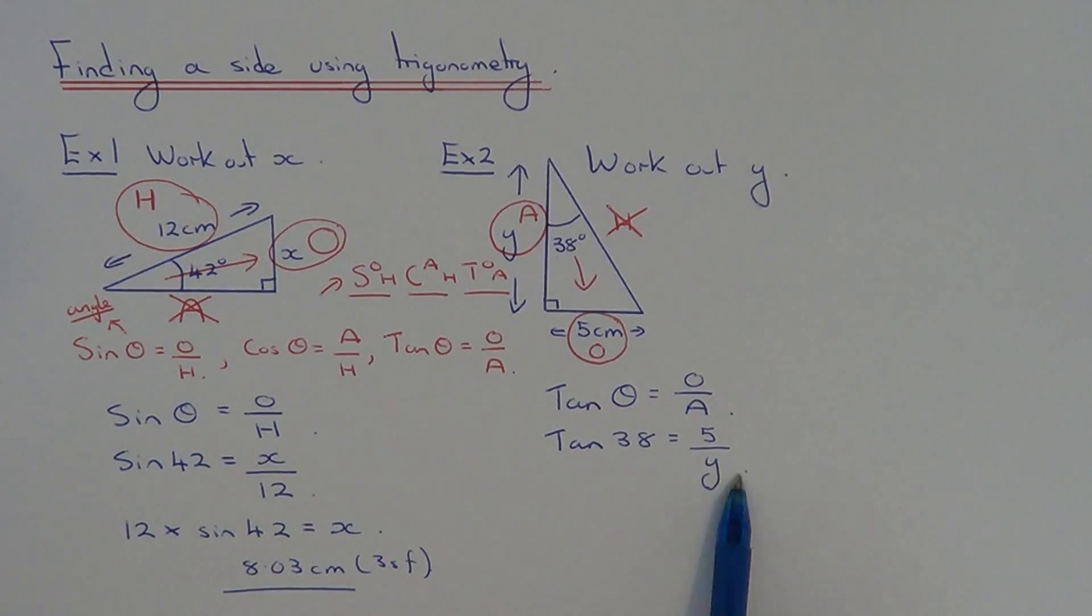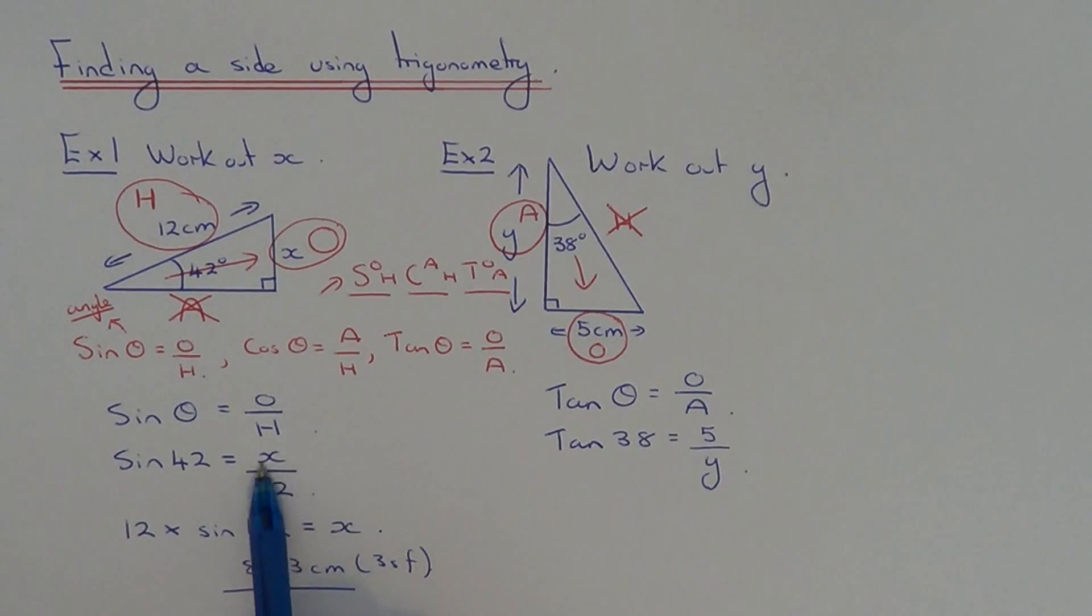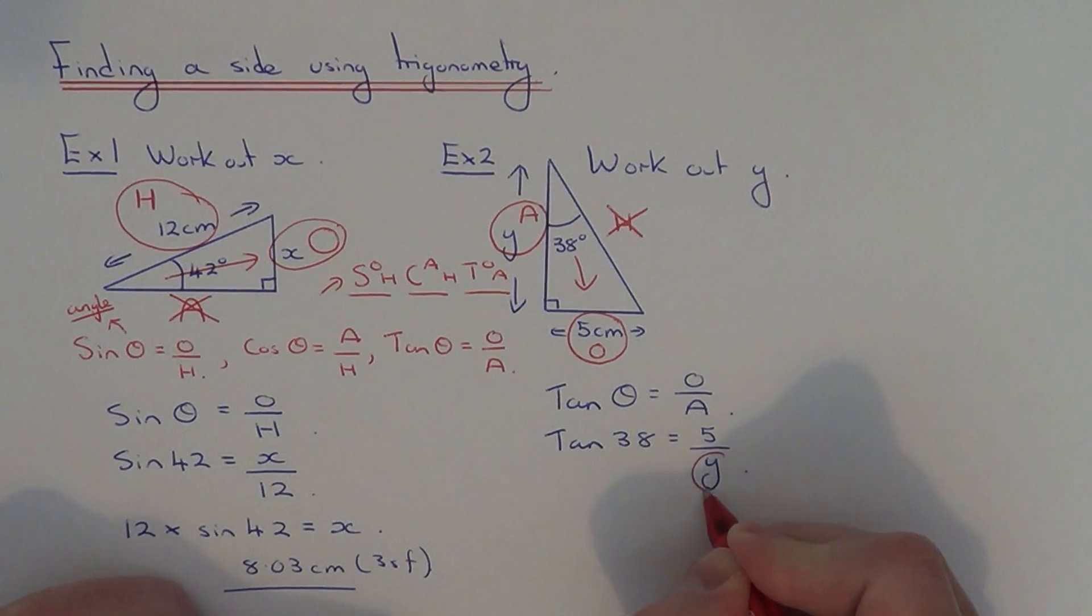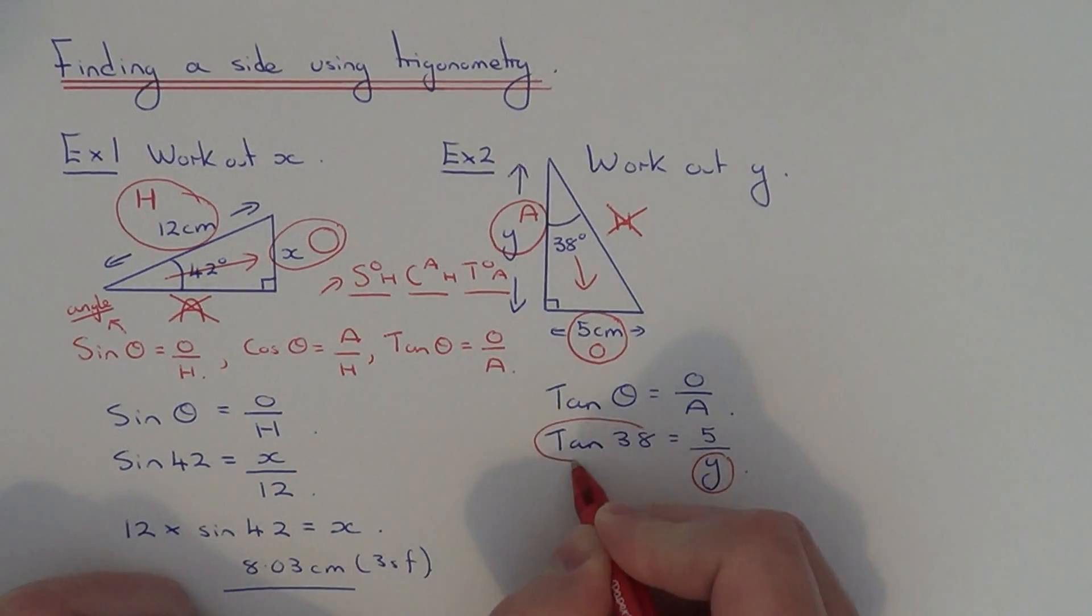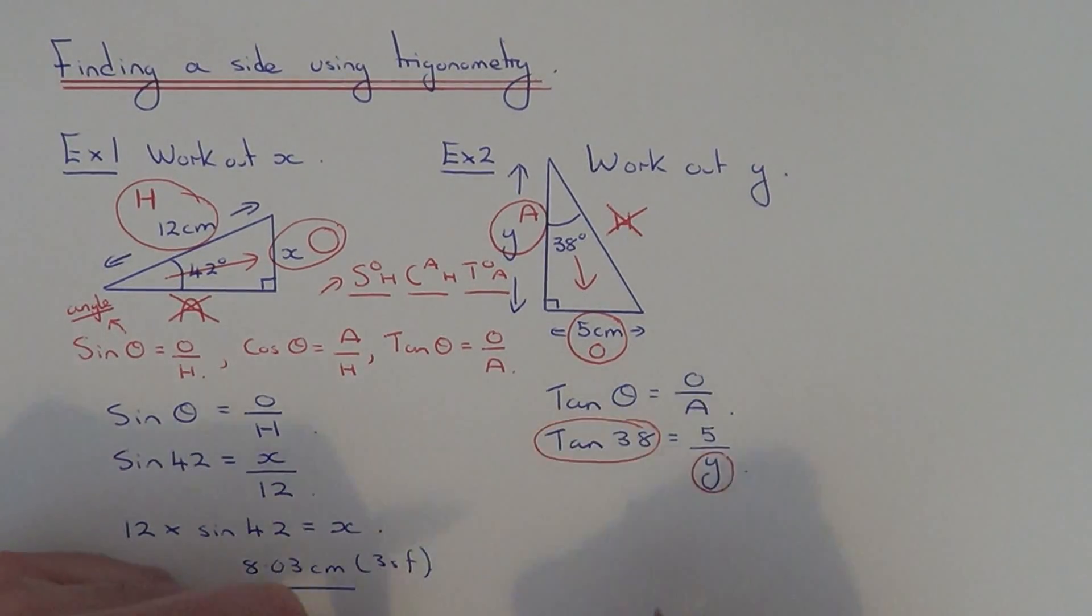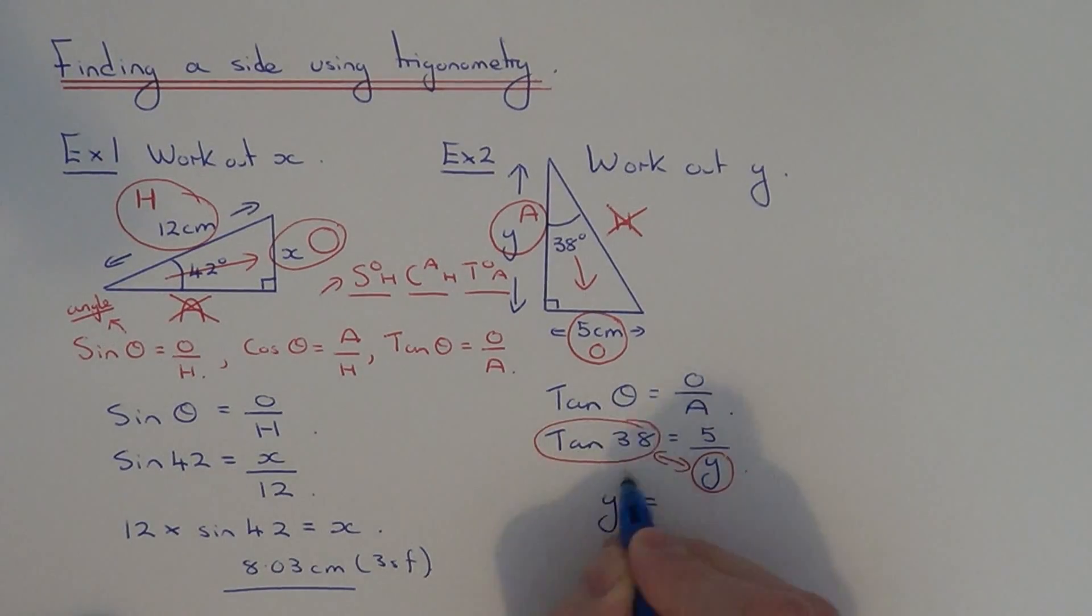On example one, the unknown side was on the numerator of the fraction. So we have to do this one a bit differently. It won't be 5 times tan 38 this time. The quickest way to do this is just to swap the denominator and tan 38 which is on the left hand side. Just swap these two values over. So bring the y to the left hand side where the tan 38 was, and put the tan 38 on the denominator.